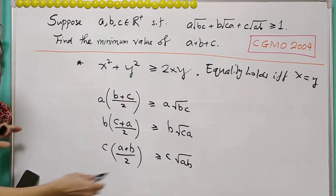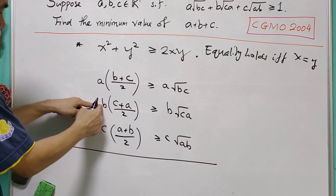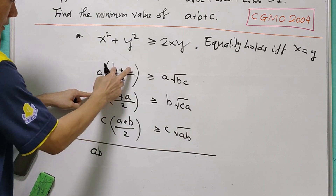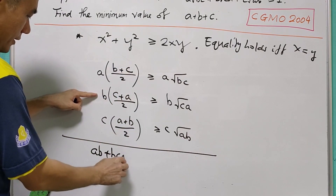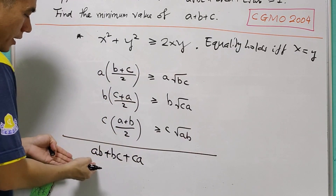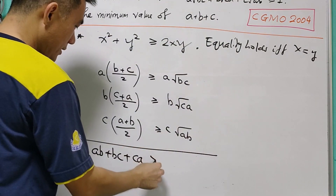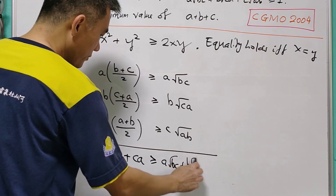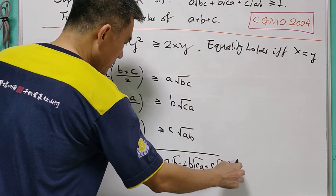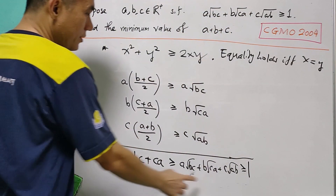When we sum up everything, the left-hand side gives us AB plus BC plus CA. The right-hand side equals A·√(BC) plus B·√(CA) plus C·√(AB). Since it is given that this expression is greater than or equal to 1, this condition implies that AB plus BC plus CA is greater than or equal to 1.